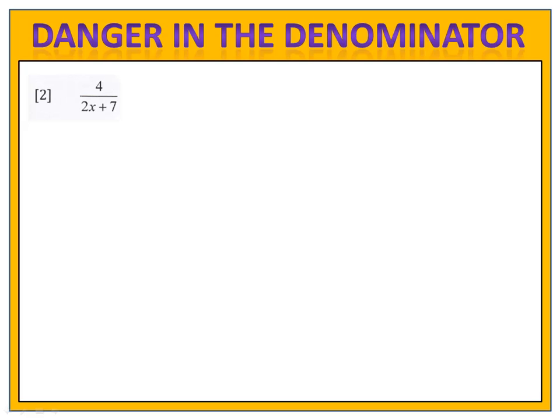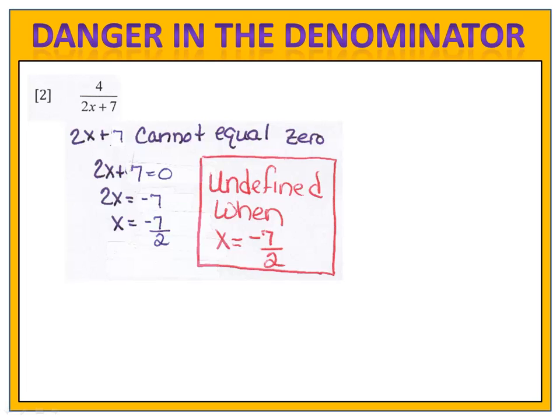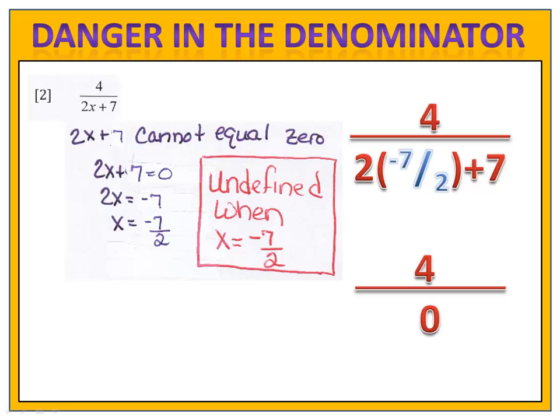In our second exercise, once again there's danger in the denominator because we see there's a variable down there. There are certain numbers we cannot plug in for x because that will cause us to have 4 over 0. We need 2x plus 7 to not equal 0. Solving that, 2x plus 7 equals 0 gives us x equals negative 7 halves. This fraction is undefined when x equals negative 7 halves — if we plugged in negative 7 halves, we'd end up with 4 over 0, and we can never divide by 0. So the value for which this fraction is undefined is negative 7 halves.